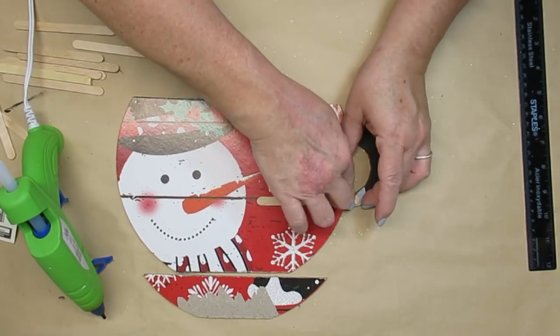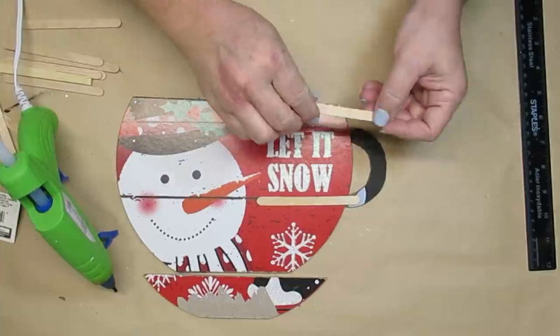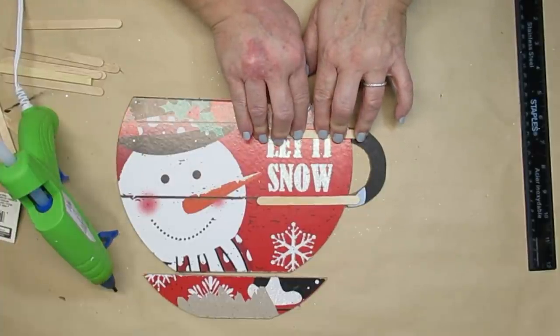Again, this is the backside of the sign, or the front side depending on how you look at it. I'm using some popsicle sticks to glue the pieces all together.